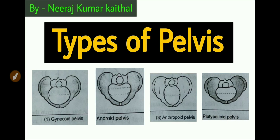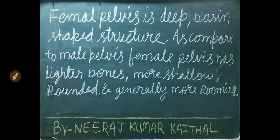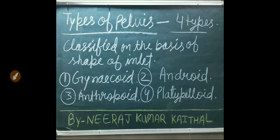Welcome to the For Nurses Preparation YouTube channel. I am Neeraj Kumar Kathal. Today we are presenting types of pelvis. Female pelvis is a deep basin-shaped structure as compared to male pelvis. Female pelvis has lighter bones, more shallow, rounded, and generally more roomier. There are a total of four types of female pelvis classified on the basis of the shape of the inlet: first is gynecoid, second is android, third is anthropoid, and fourth is platypelloid.